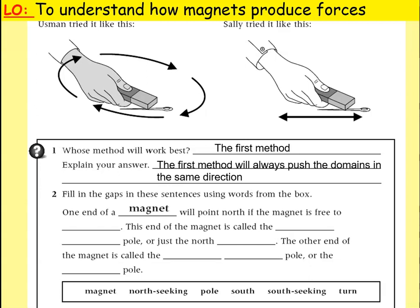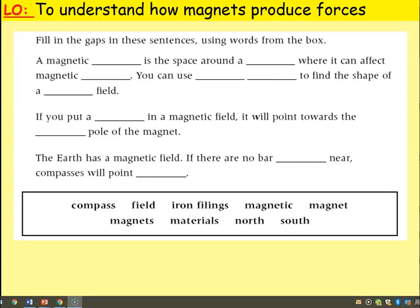Question two: fill in the gaps. One end of a magnet will point north if the magnet is free to turn. This end is called the north seeking pole, or just the north pole. The other end is called the south seeking pole, or the south pole. Pause the video to make sure you have all those answers written down.